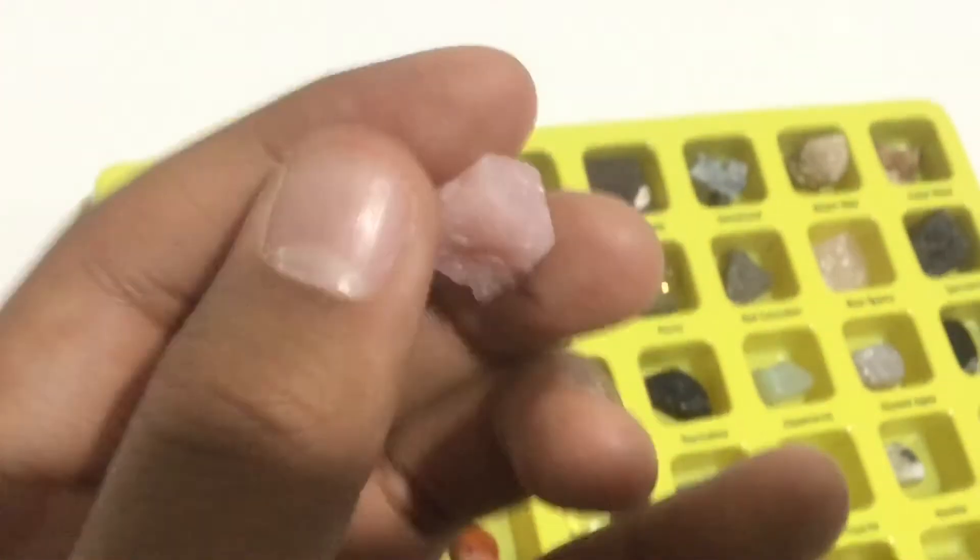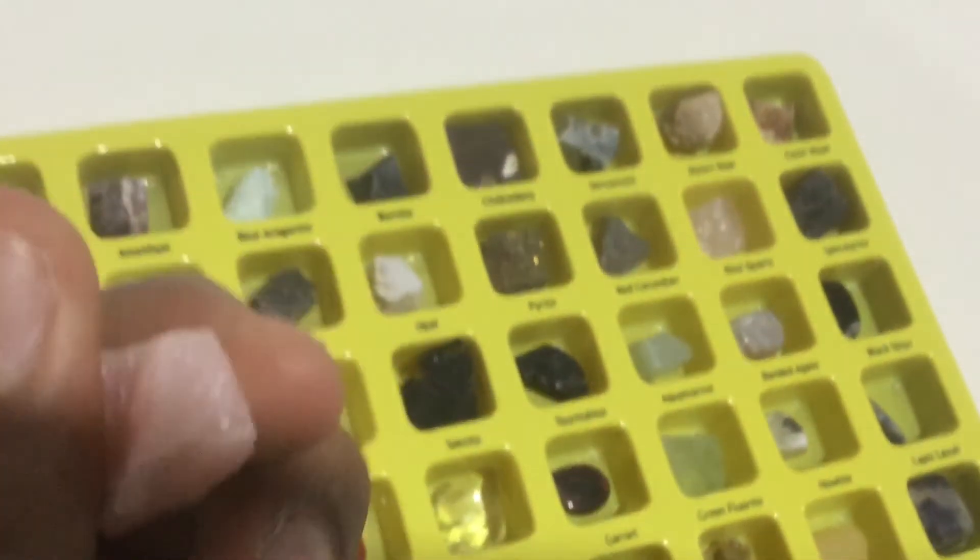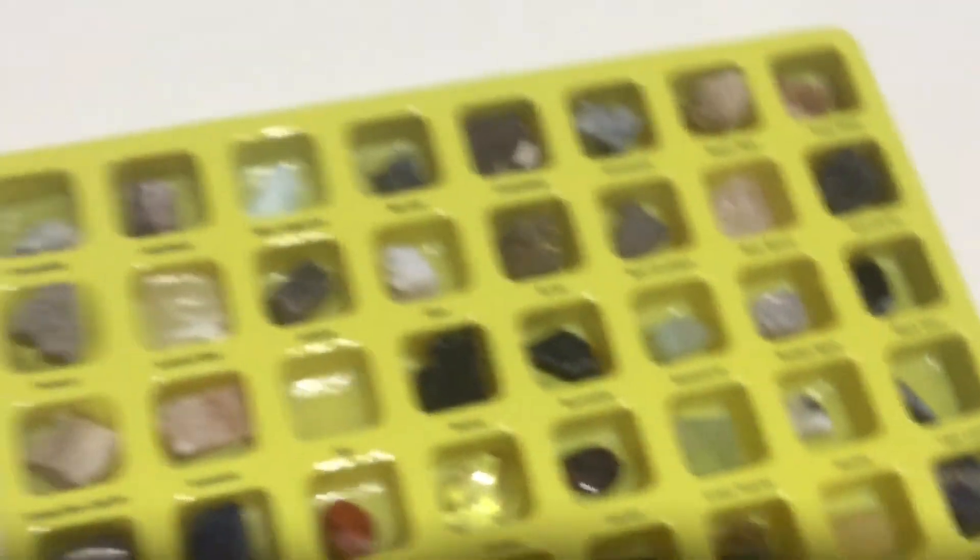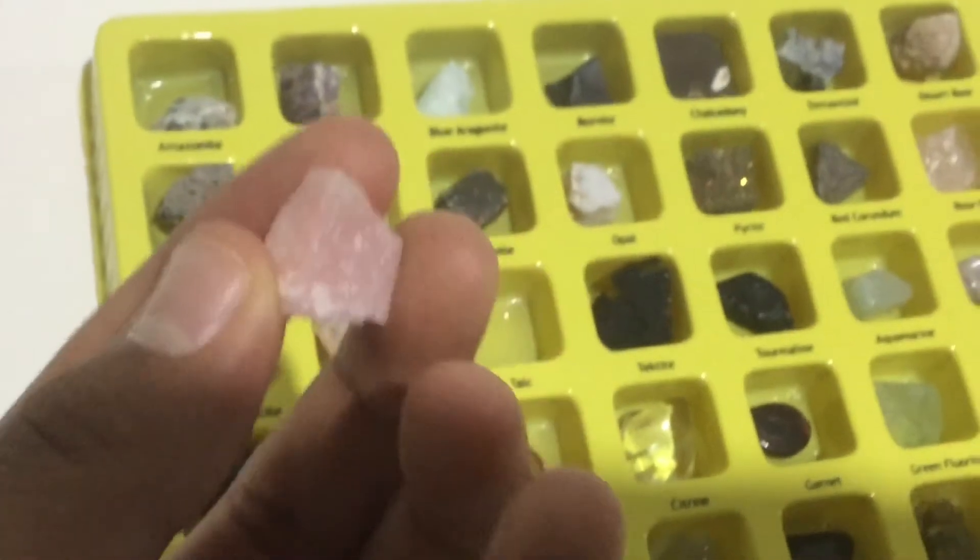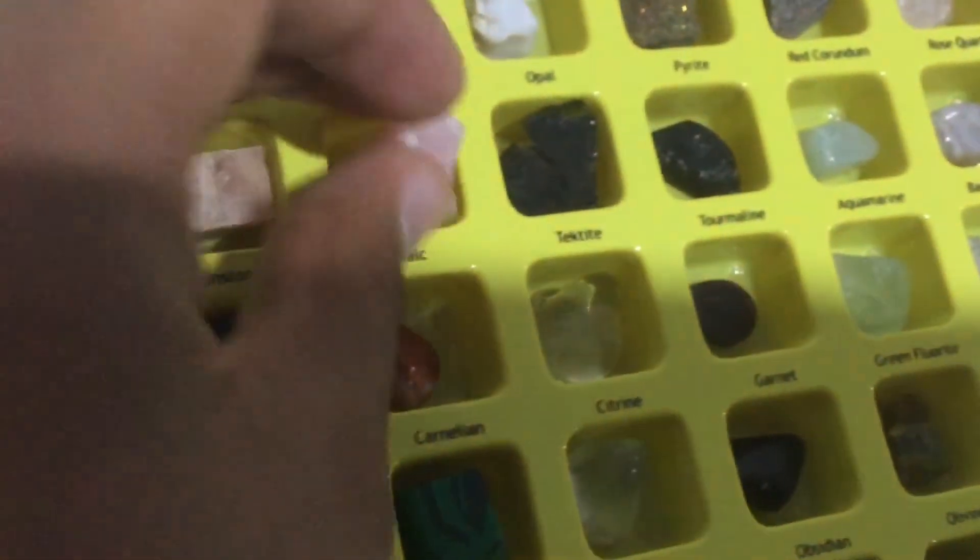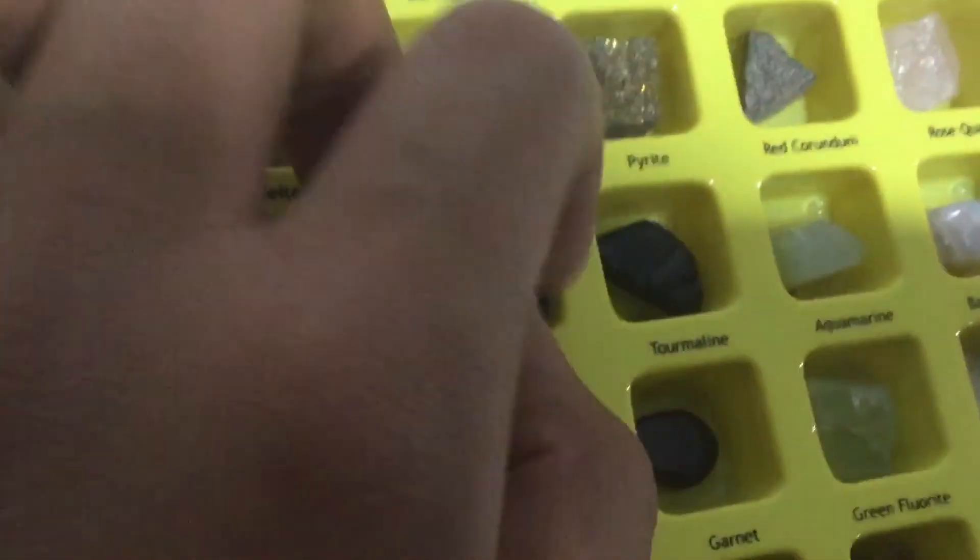Talc is soapy-ish. Cool thing about this: it is the softest mineral in the Mohs hardness scale in rocks and minerals. Red corundum is the third hardest. This one's the softest, which is really cool. It's a pink version because it comes in different colors.